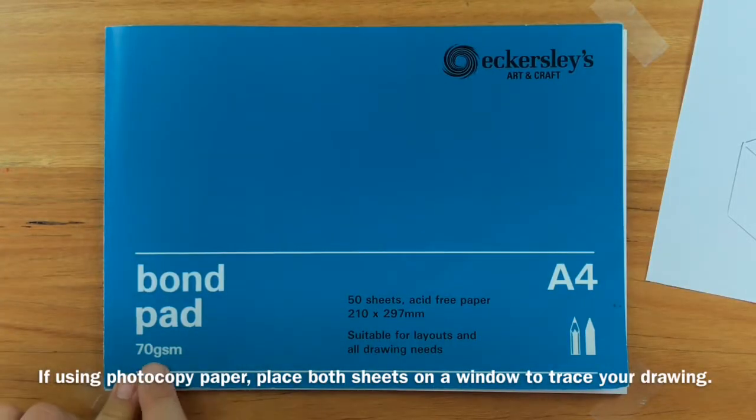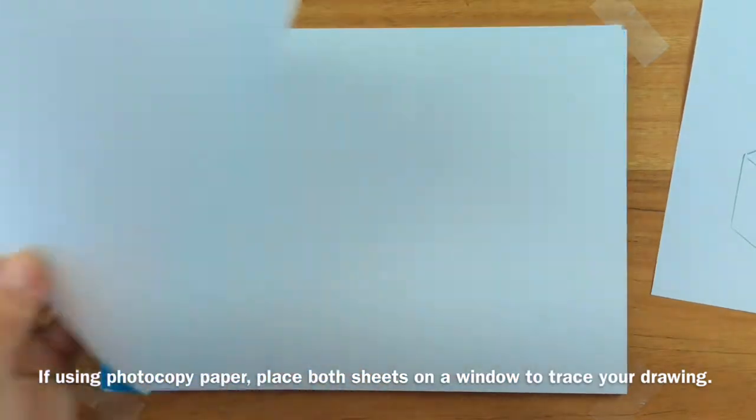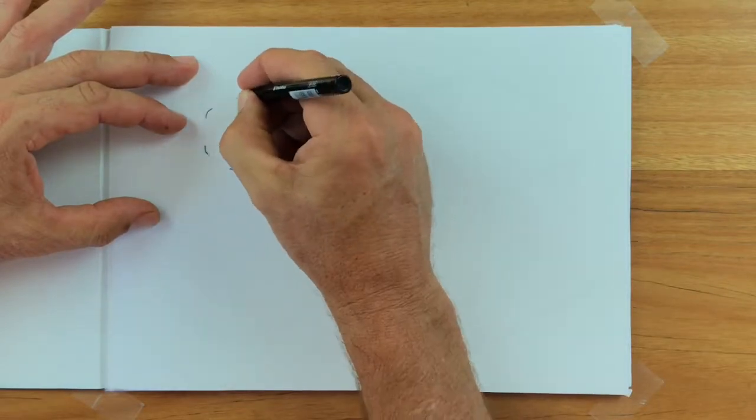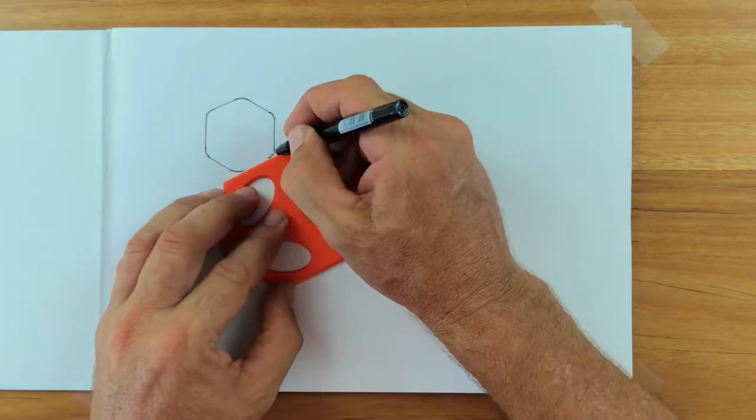I'm using a bond pad. It's really thin paper. So I'll pop it underneath. It doesn't show up so well on camera, but it's quite easy to trace. The curves first, then the straight lines to match.